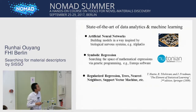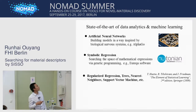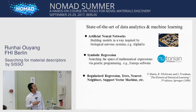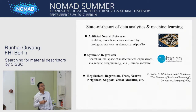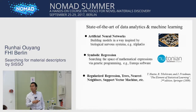Here I will show you the state of the art of data research analytics and machine learning through artificial neural networks, which build models inspired by biological nervous systems — for example, AlphaGo. There is also symbolic regression, which learns a function by searching the space of mathematical expressions via genetic programming — for example, the Eureka software. You can also find many other machine learning methods such as regularizing regression, trees, nearest neighbor, and support vector machines.